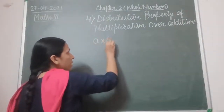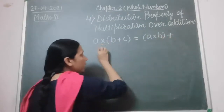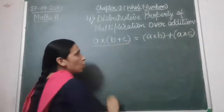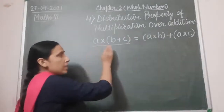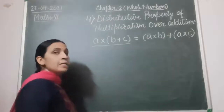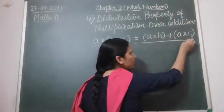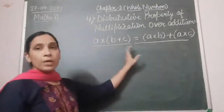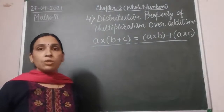The fourth property is distributive property. What does this property say? A multiplied by (B plus C) is equal to A multiplied by B plus A multiplied by C. Distributive property of multiplication over addition says that multiplying the first number by the sum of the second and third number is always equal to multiplying the first and second number and adding that product to the product of the first and third number. That is your distributive property of multiplication over addition.